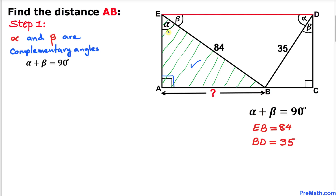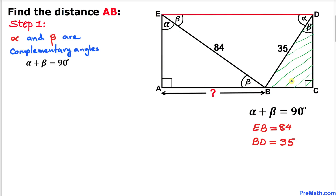Now let's focus on triangle ABE. We know this angle is 90 degrees, this angle is alpha, and the sum of the angles of this triangle is 180 degrees. So the remaining angle has to be beta, since alpha and beta are complementary angles.